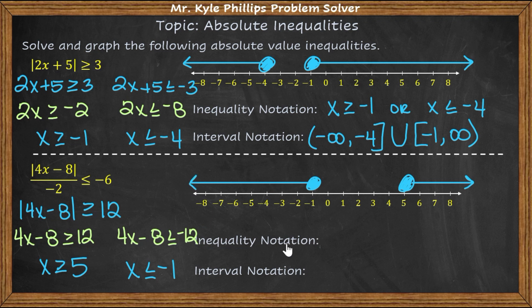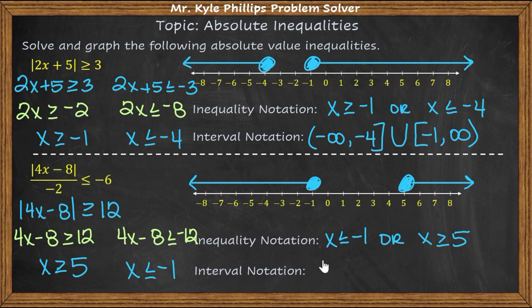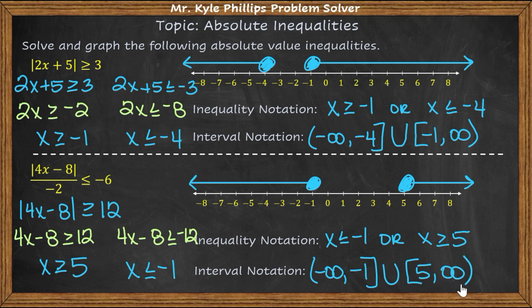Inequality notation: x is less than or equal to negative 1, or x is greater than or equal to 5. Interval notation with union: (−∞, −1] ∪ [5, +∞). And that's how you do absolute value inequalities! I hope this video helped — if you have any questions, please leave them in the comments and we'll see you in the next video.